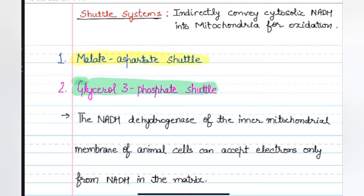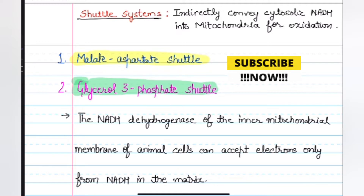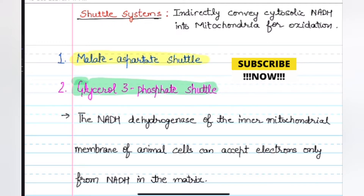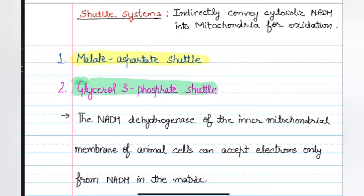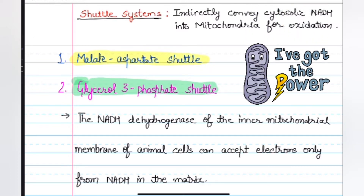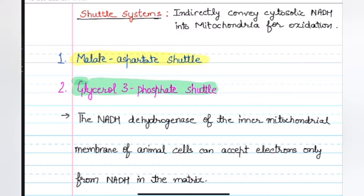First of all, let's discuss what is a shuttle. A shuttle is a mechanism for transport of metabolites or chemical groups across the mitochondrial membrane. Shuttle systems transfer electrons from the hydrogen of cytoplasmic NADH to the mitochondrial electron carriers across the mitochondrial membrane.